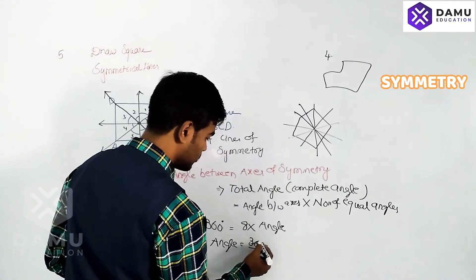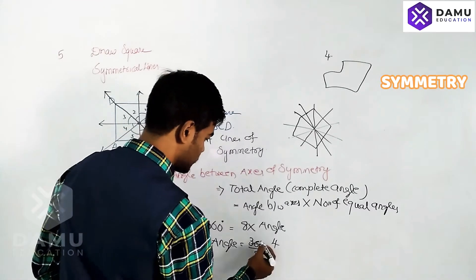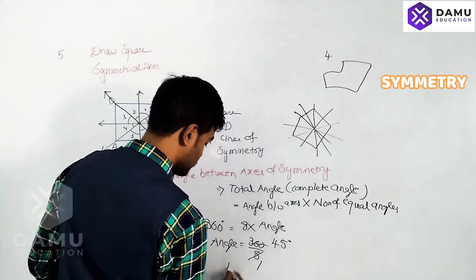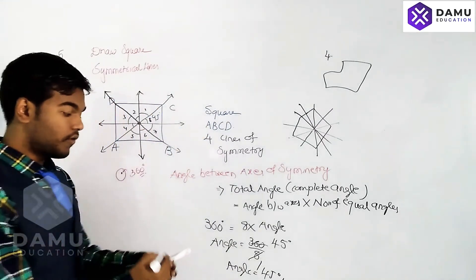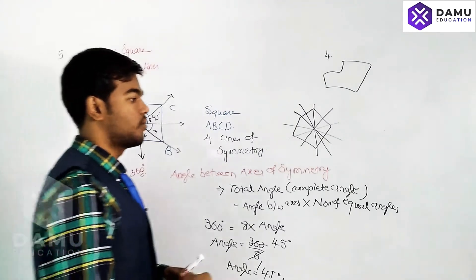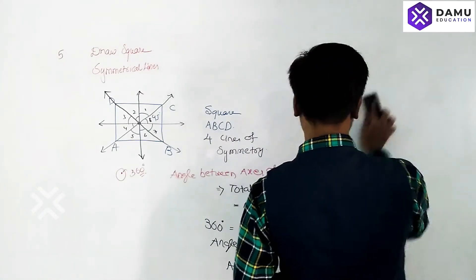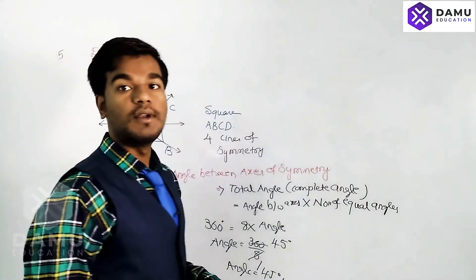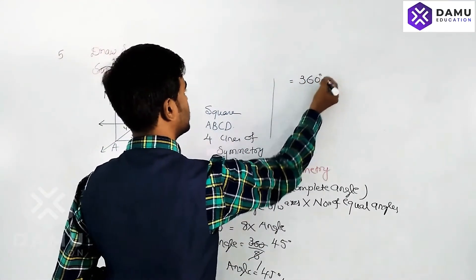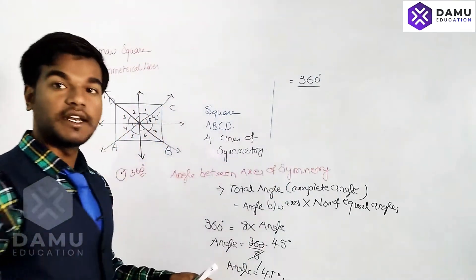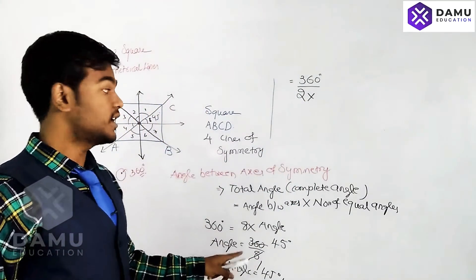The complete angle is 360 degrees, divided by eight equal angles, so the angle between axes of symmetry is 360 divided by 8, which equals 45 degrees. From this we can derive a formula: 360 degrees divided by two times the number of lines of symmetry.